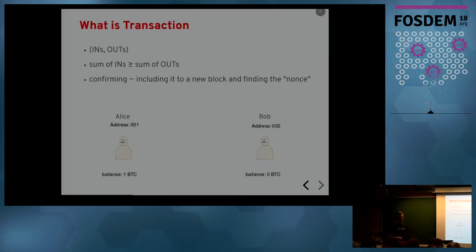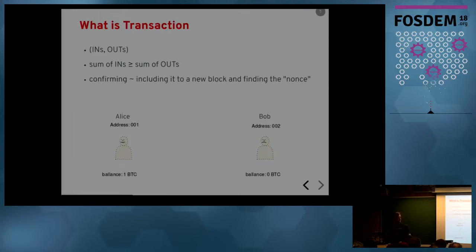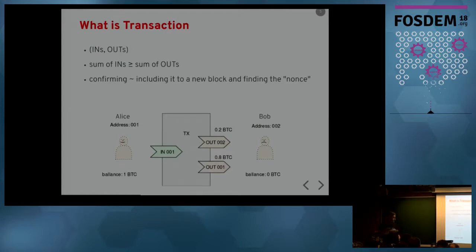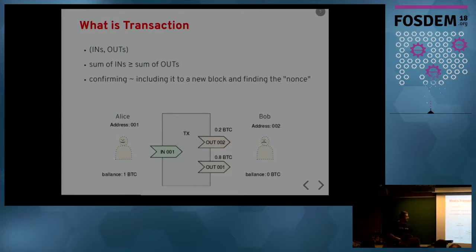In traditional banking, the bank holds your balance in some database like Oracle, subtracts your money and sends it to someone else. In blockchain it's completely different. If Alice wants to send money to Bob, she has to spend all her money. There is an implementation detail: she can send the rest back to herself. So she creates a transaction with one input and two outputs — one output to Bob and one output address back to herself.